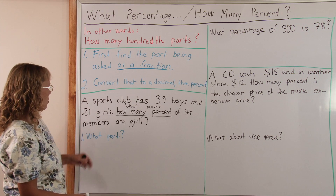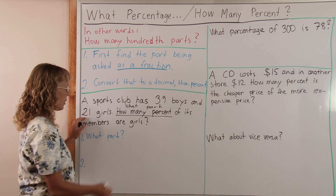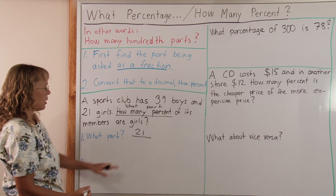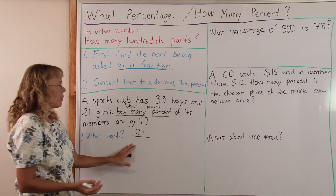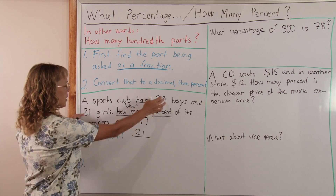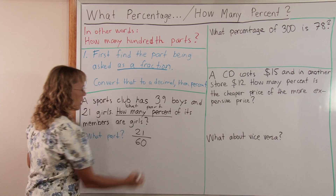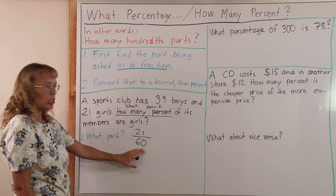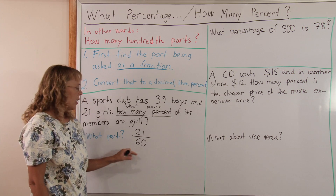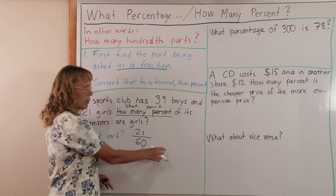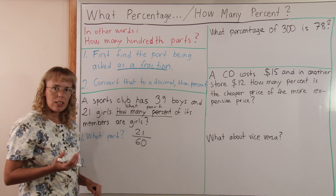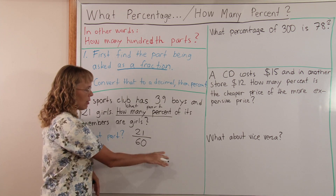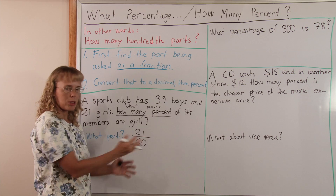There are 21 girls, so I write a fraction: 21 over the total. There are 60 total, so the fraction is 21 over 60. Now all we do is change this to a percent. You could first change it to a decimal using a calculator — just do 21 divided by 60 to get the decimal, and then convert that to a percent.